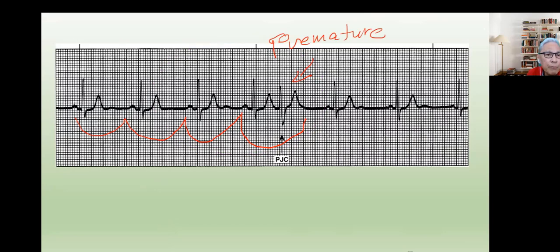Where did it come from? We notice that this does not have any P wave. This is coming from the AV node. So therefore, we call that a premature junctional contraction.